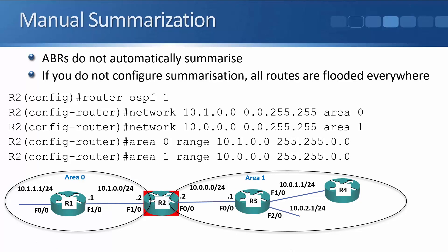The other benefit is: if the 10.0.0.0/24 link goes down, all routers in area one will have to reconverge and recalculate — R3 and R4 will have to do work to update their routing tables. But from R1's point of view, its summary route stays the same. If any of those individual routes go down, the 10.0.0.0/16 route is still good. So an outage in a different area doesn't affect routers in this area — less routes means less memory, and outage impact is confined to one area, using less CPU resources.